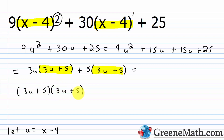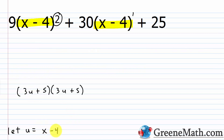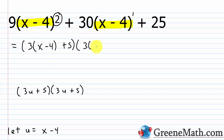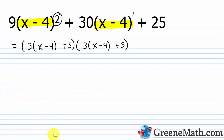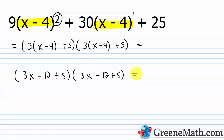Back-substituting u equals x minus 4: I have 3 times the quantity x minus 4, plus 5, all squared. Simplifying inside: 3 times x is 3x, 3 times negative 4 is negative 12, plus 5 gives negative 7. So this becomes the quantity 3x minus 7 squared. That's the final answer.